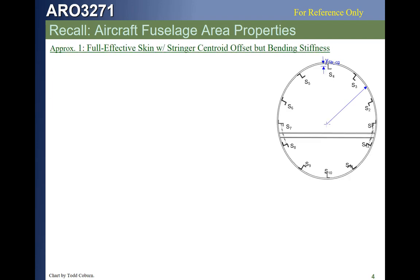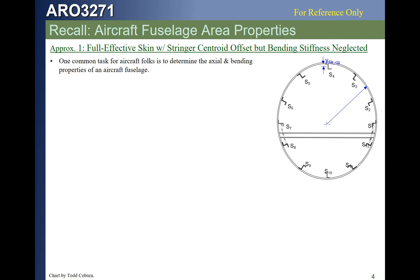We covered in Statics how to approximate the bending properties of a fuselage, and we're going to go back through some of those things. We'll look at four different ways of idealizing the fuselage that lay the groundwork for our approach, but are not what we're ultimately going to do. A fuselage structure has thin skin and stringers, and the centroid of each stringer does not lie on the skin itself — it lies inside.